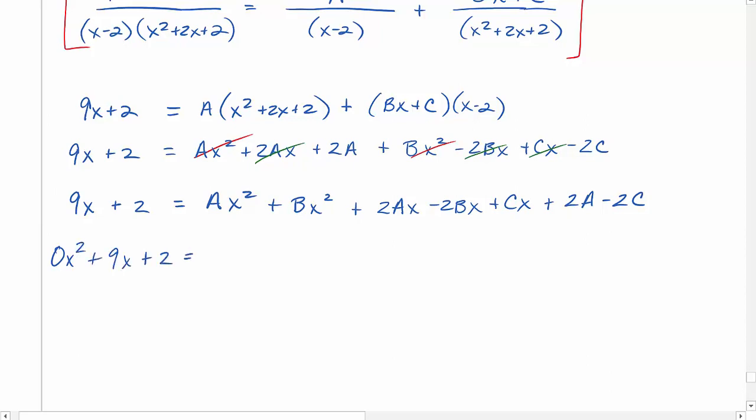And then we're factoring on the right, so this becomes a plus b times x squared, plus 2a minus 2b plus c times x, and then those last two terms are my constant.